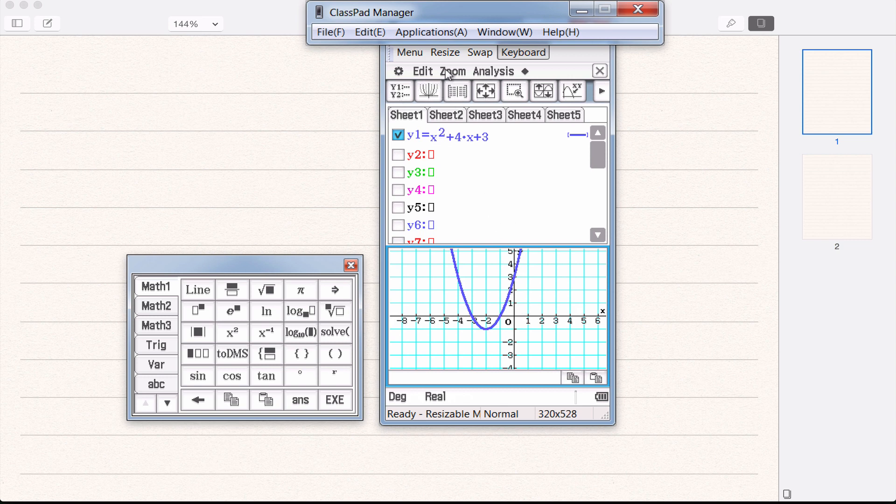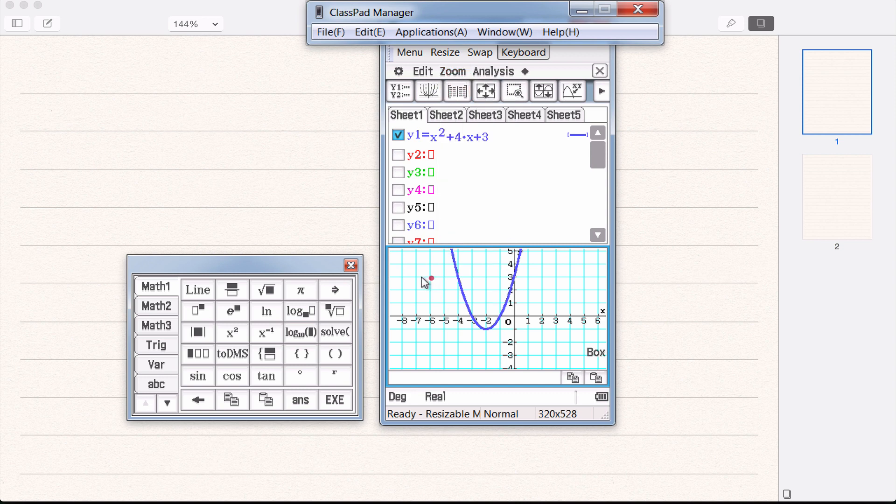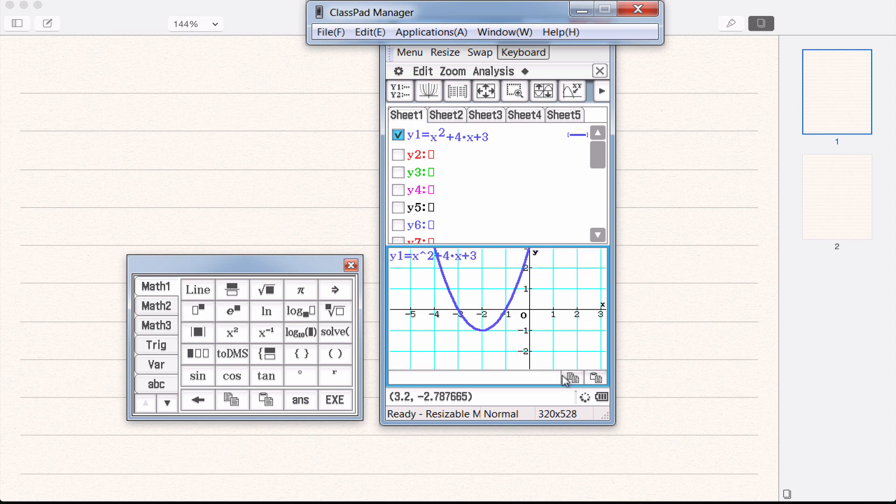I'd like to show you the zoom function. And there's a whole load of different options here. I'll just show you a few of them. Zoom box. This first one here lets you draw a box around an area and then it zooms in on that particular area if you wanted to have a closer look at these x intercepts.